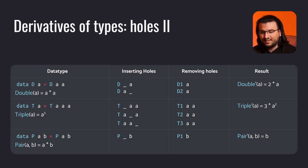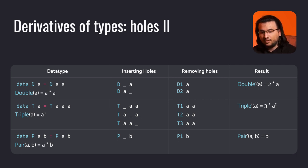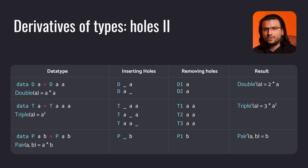The triple data type is like double, except it encapsulates three values of type a. By exactly the same reasoning, after removing the holes, we get three data constructors, each holding two values of type a. The new data type's mathematical representation is 3a squared. So far, the new expressions look like the derivatives of the original ones — and indeed, they are.